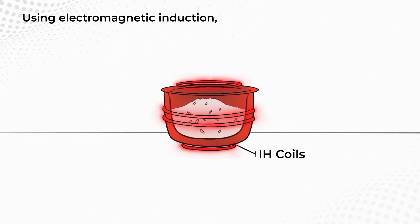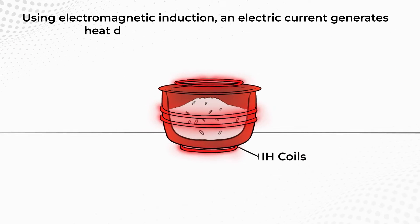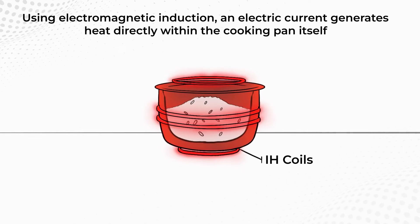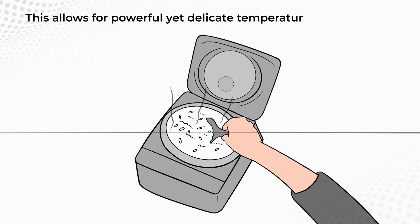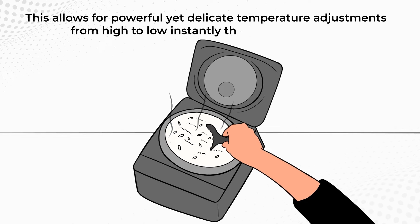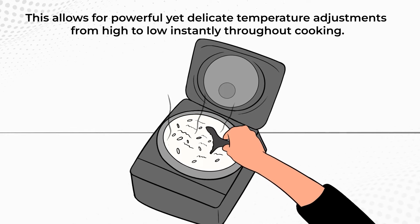Using electromagnetic induction, an electric current generates heat directly within the cooking pan itself. This allows for powerful yet delicate temperature adjustments from high to low instantly throughout cooking.